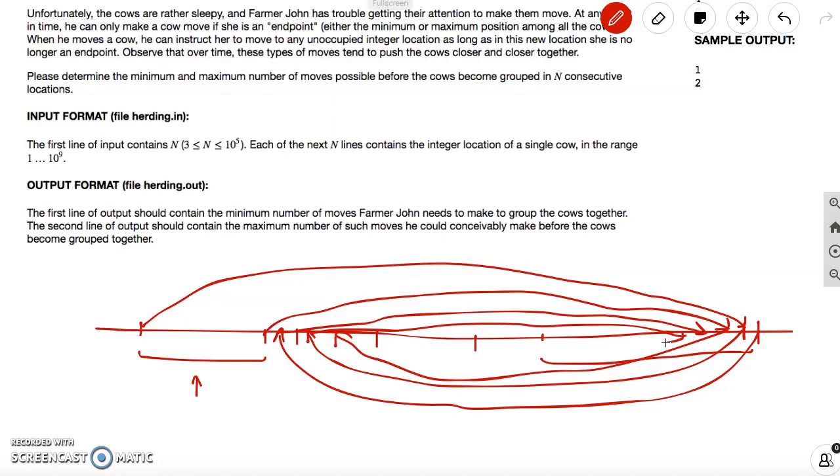This is a really cool observation, because that means that we can actually compute this without having to try out any routes. What does this number end up looking like?